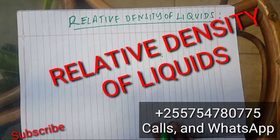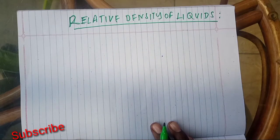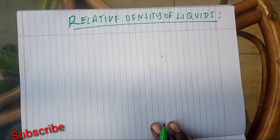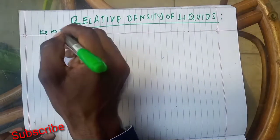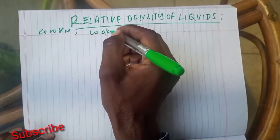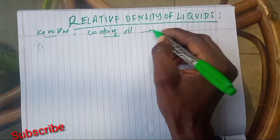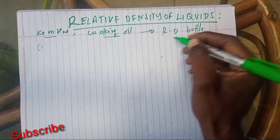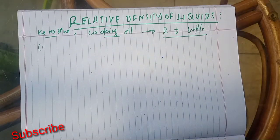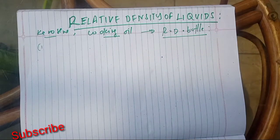We have learned about density and relative density, but we left with a part called the relative density of a liquid. Relative density of a liquid is all about determining the density of liquids — for example, kerosene or cooking oil. This is done using a relative density bottle, which is used to determine the relative density of the liquid.